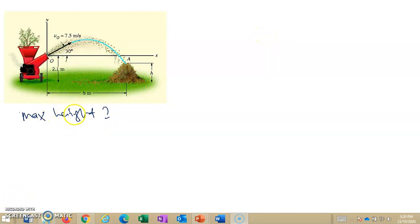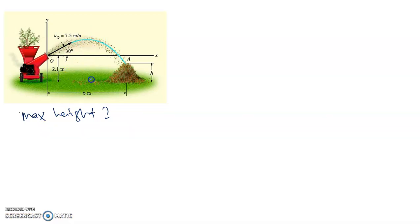Now the additional question is asking you to get the maximum height of the chips measuring from the ground. You know that the distance range is 6 meters, so the maximum height will occur in the middle of the range, which is in this position, in between. So 6 divided by 2, this is 3 meters. The maximum height occurs at the middle distance.